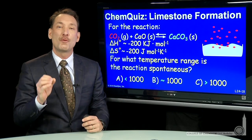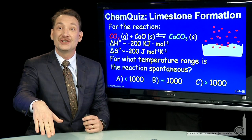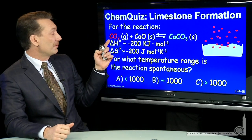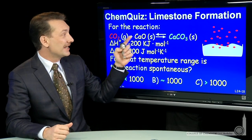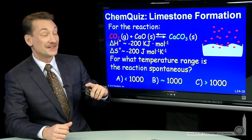Let's look at a chemical reaction and determine what temperature range it will be favorable for. So where is delta G negative? The chemical reaction: carbon dioxide and calcium oxide forming calcium carbonate, the formation of limestone, essentially.